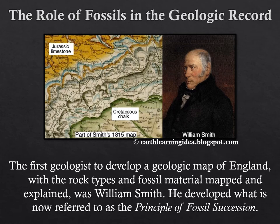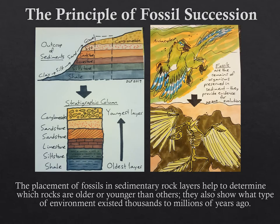While the sequence of deposition can be determined by examining sediments by themselves, fossils — the evidence of ancient life preserved in sediment — are critical in determining exactly when particular events to develop that landscape took place. The first geologist to develop a geologic map of England with rock types and fossil material mapped was William Smith in 1815. He developed what's now referred to as the principle of fossil succession, which states that certain creatures would be present, evolve, and become extinct — revealing a succession or progression of life on Earth.